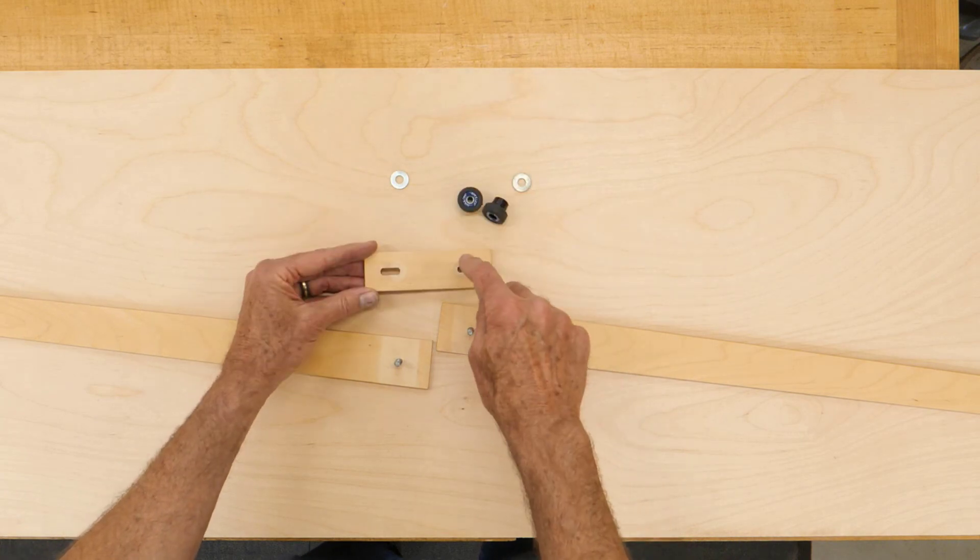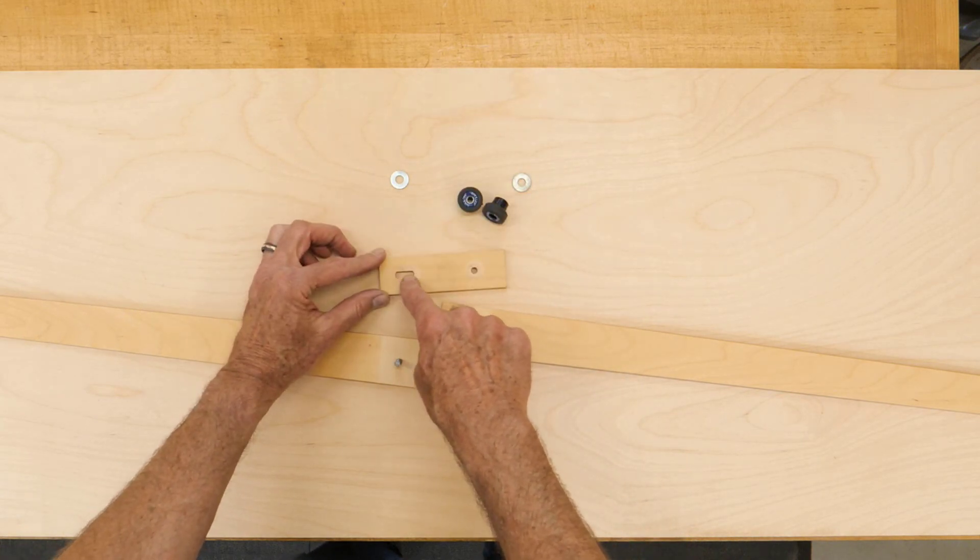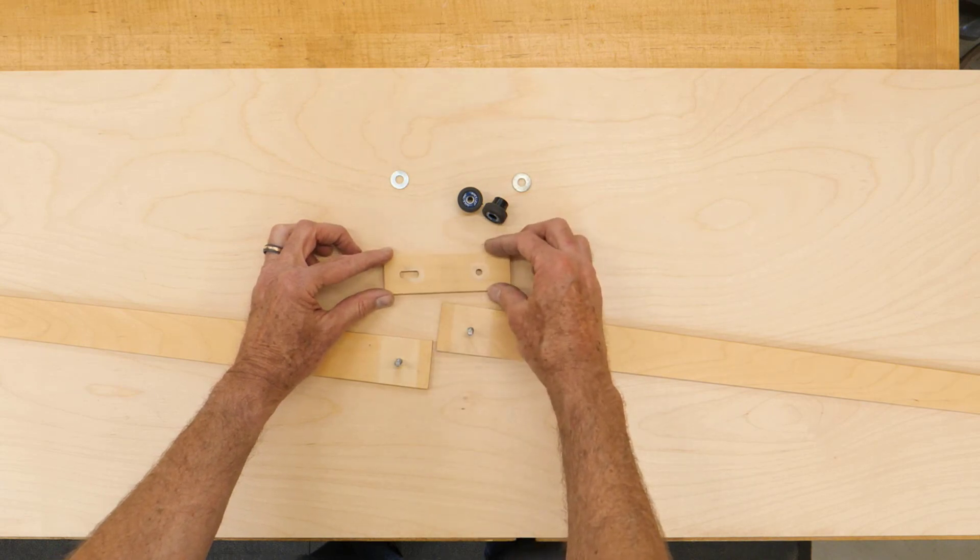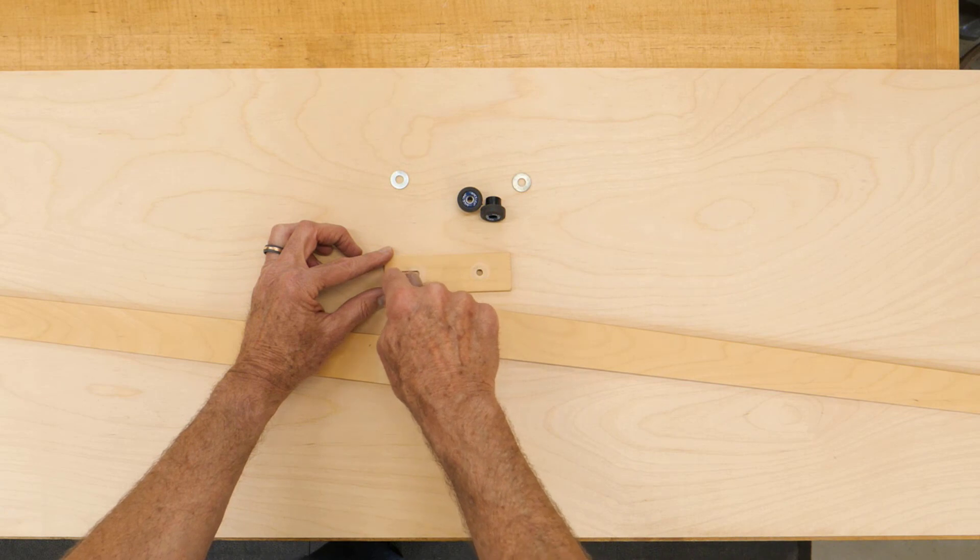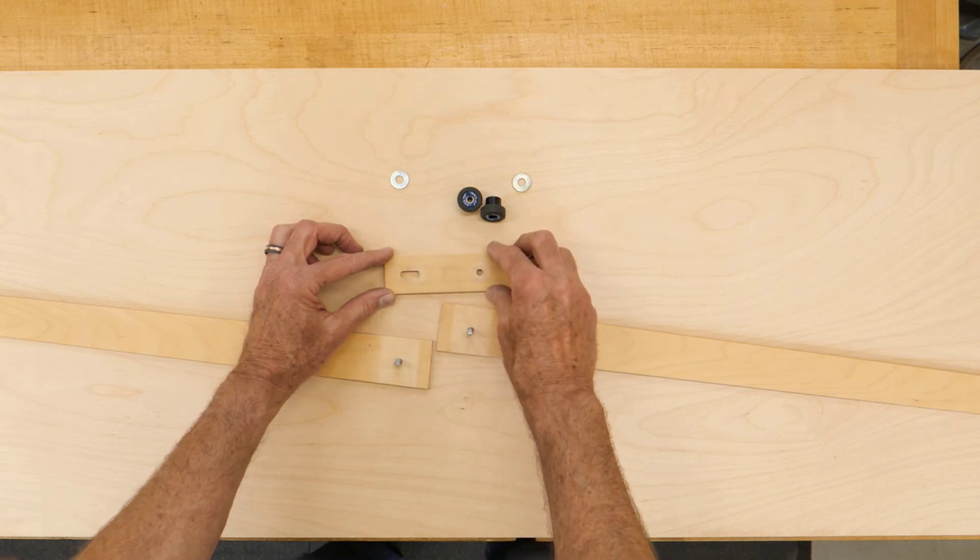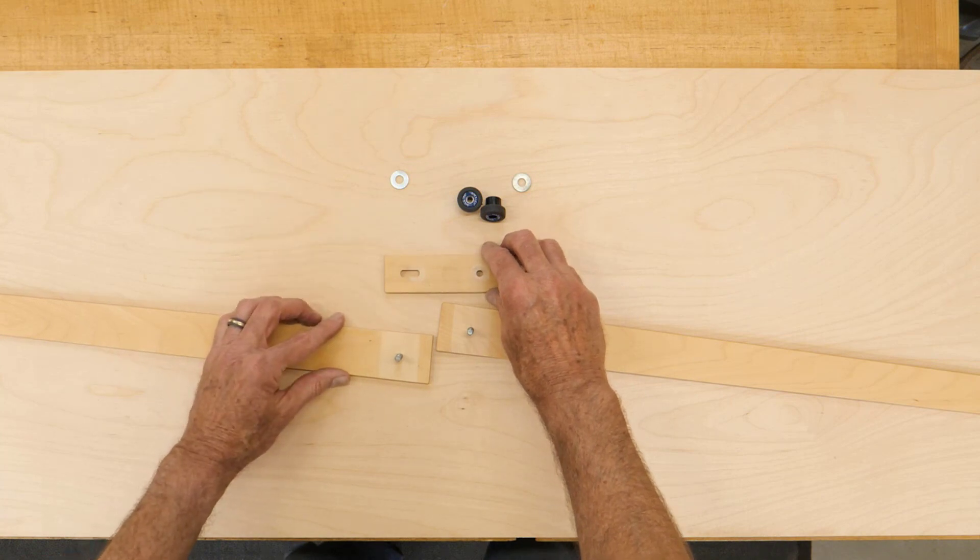On this piece, it's got a hole on one end, a slot on the other. The slot is just made on a drill press, and I've set up a fence and just drilled a series of quarter-inch holes and then filed that and smoothed it. So that works out just fine.